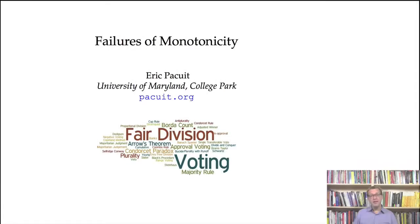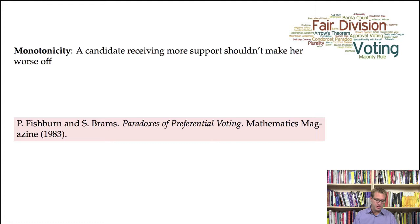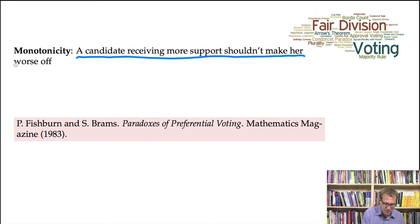A very interesting and particularly troubling class of voting paradoxes are those that arise when a voting method does not satisfy a very natural monotonicity property. The monotonicity property I have in mind can be informally described as follows: a candidate receiving more support shouldn't make her worse off.